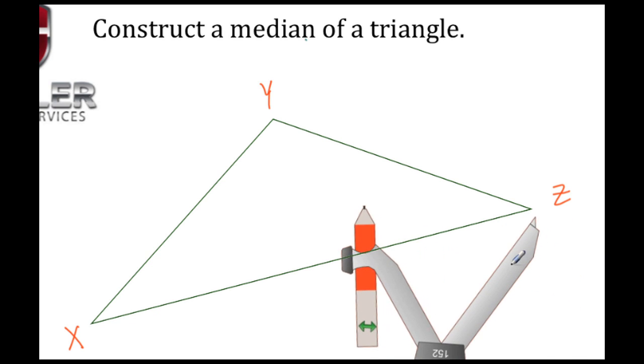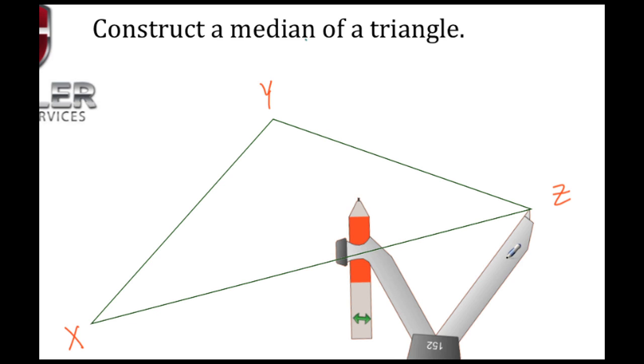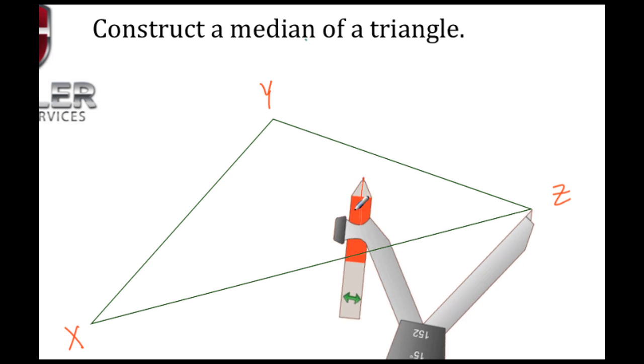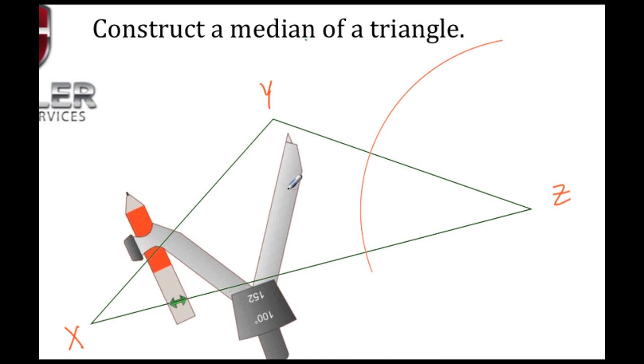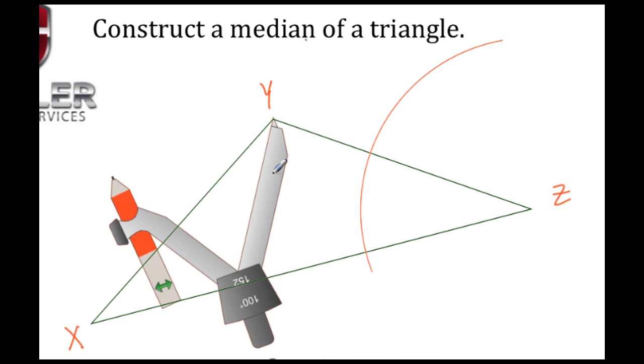First thing we need to do is take out our compass tool. The compass needs to be set with a radius that's longer than the halfway point of the segment that we want to intersect. Once that's set, we create an arc. Then we go over here to Y and we do the same thing.